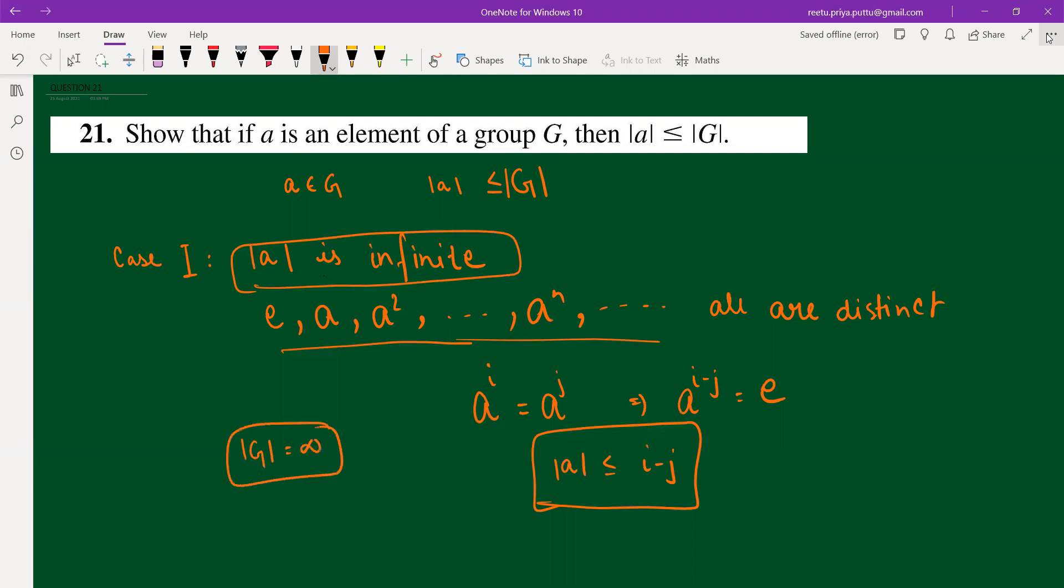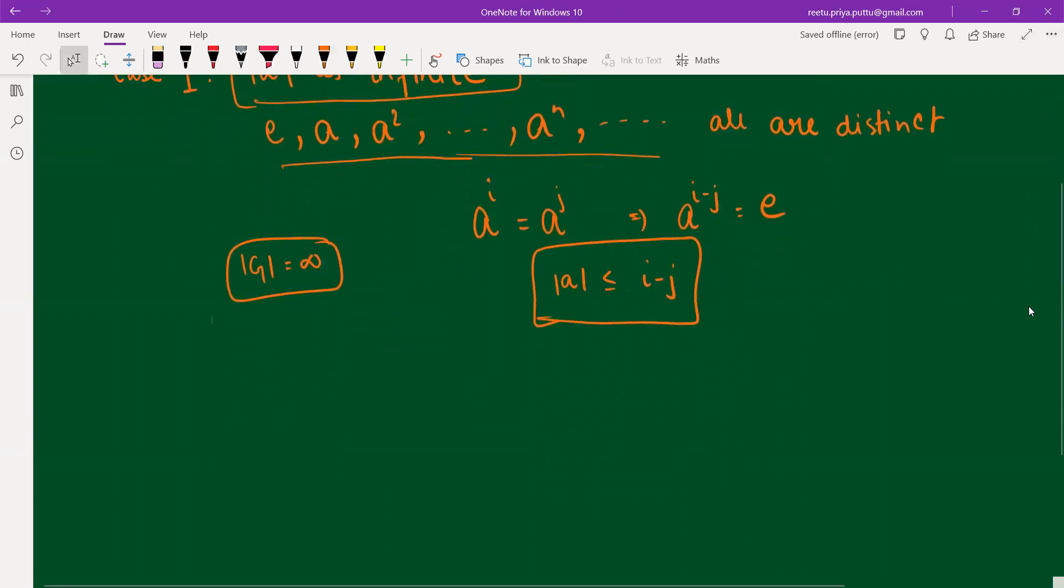Now what we will do, we will consider another case. So it will be case two, where order of A will be finite. Suppose we are considering that order of A is n. So we have to show that G will contain at least this much element or even more than this element.